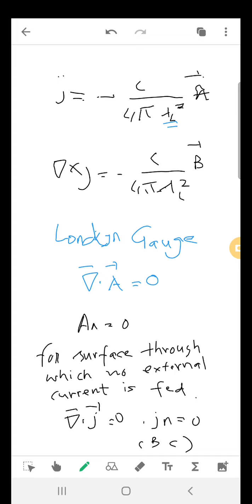Ultimately we will get something called a London gauge, and we will get the value of n for the surface through which the external current is fed at the two boundary conditions. The normal value of the current should equal 0 and the magnetic field should also equal 0.